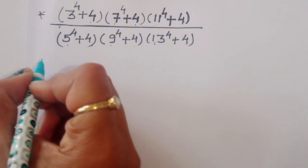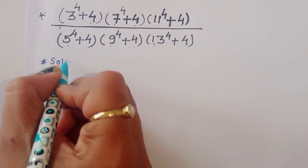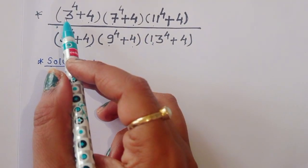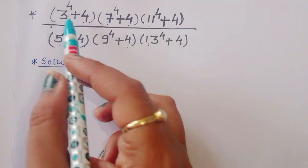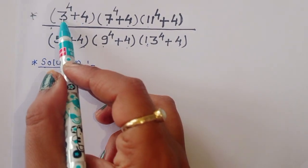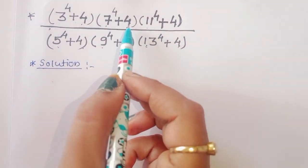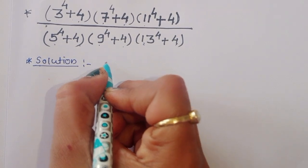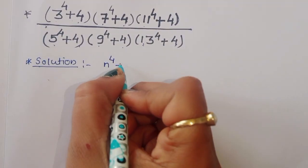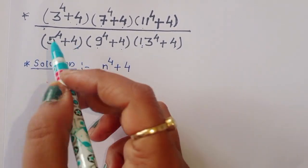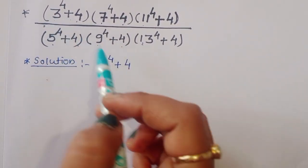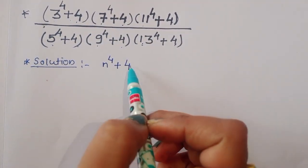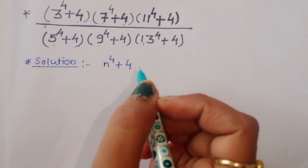How can we solve this type of question? Let's see the solution. First, what is given — 3 power 4 plus 4 — all of these are in the form n power 4 plus 4. You can see all these numbers: n is 3, 7, 11 in the numerator and 5, 9, 13 in the denominator, all in the form n power 4 plus 4.